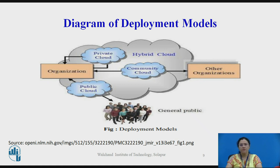Community cloud is similar to a public cloud, except that its access is limited to a specific community of cloud consumers. Hybrid cloud is a cloud environment comprised of two or more different cloud deployment models. For example, a cloud consumer may choose to deploy cloud services processing sensitive data to a private cloud, and less sensitive cloud services to a public cloud. The result of this combination is a hybrid deployment model.